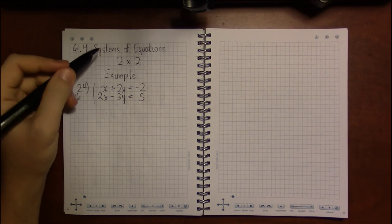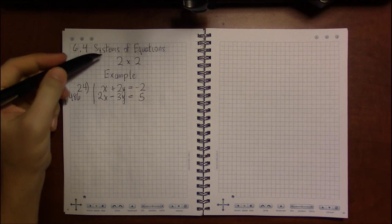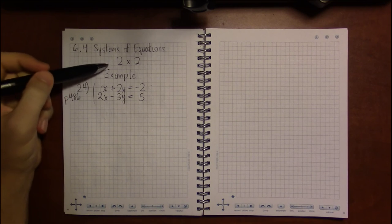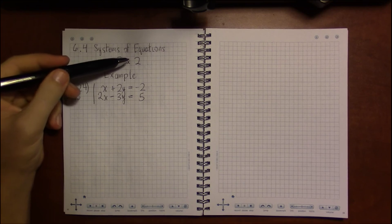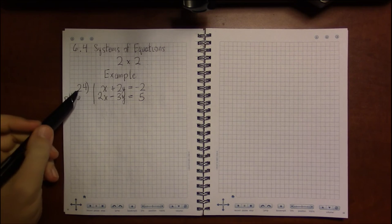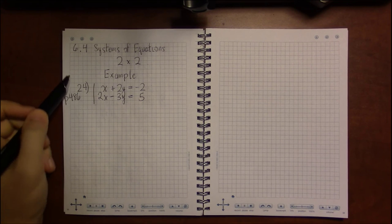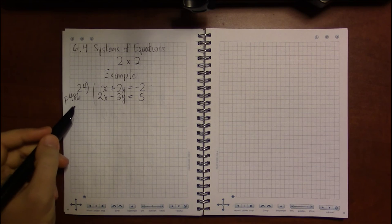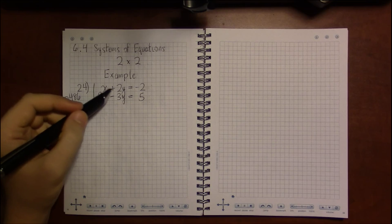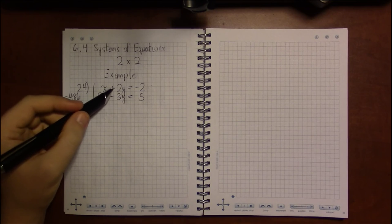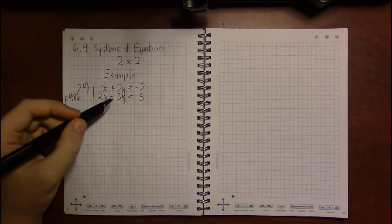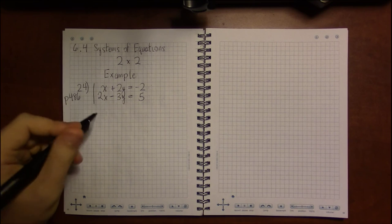Let's look at some examples of the substitution method of solving systems of equations with two equations and two unknowns. I'm looking at exercise 24 of section 6.4 on page 486. The system we're looking at is x plus 2y equals minus 2 and 2x minus 3y equals 5.